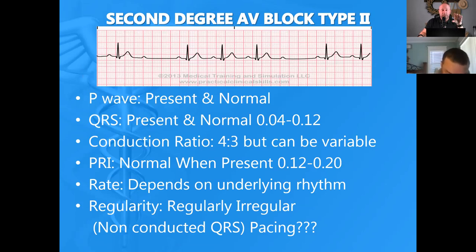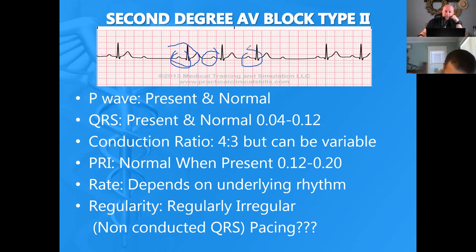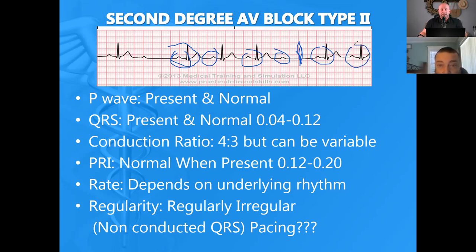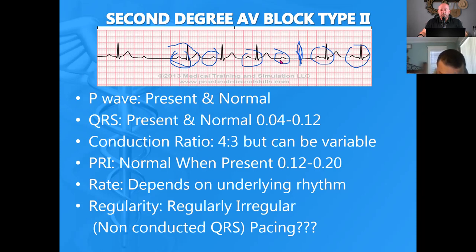Second degree type two: the difference from a type one is that this PRI stays the same. That PRI right there is the same as this one and this one. But then I get a P wave with a non-conducted QRS, and then it starts over again with the PRI staying constant. A type two second degree block will have the same PRI but then arbitrarily drop a QRS. You have a constant PRI, then a P wave with a non-conducted QRS, a short compensatory pause, and then the rhythm starts over.